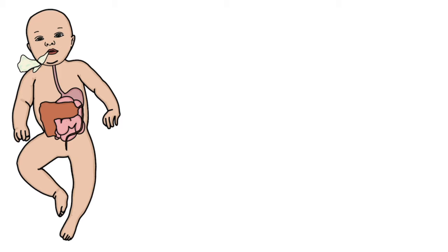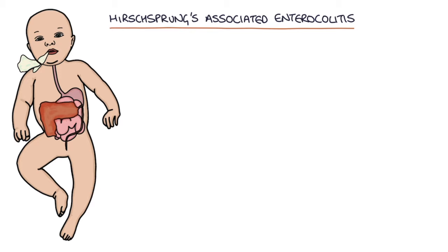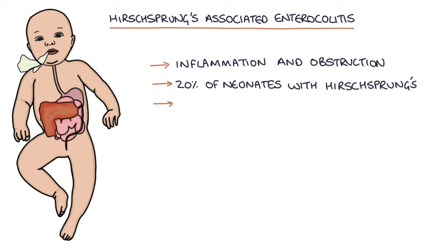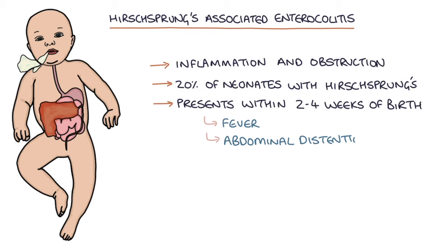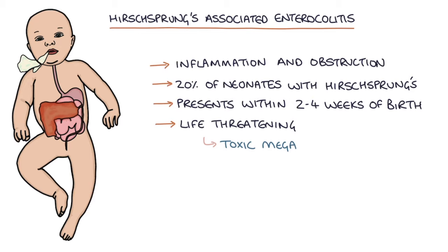Hirschsprung's associated enterocolitis is inflammation and obstruction of the intestine occurring in around 20% of neonates with Hirschsprung's disease. It typically presents within 2-4 weeks of birth with fever, abdominal distension, diarrhoea often with blood, and features of sepsis. It is life-threatening and can lead to toxic megacolon and perforation of the bowel. It requires urgent antibiotics, fluid resuscitation, and decompression of the obstructed bowel.